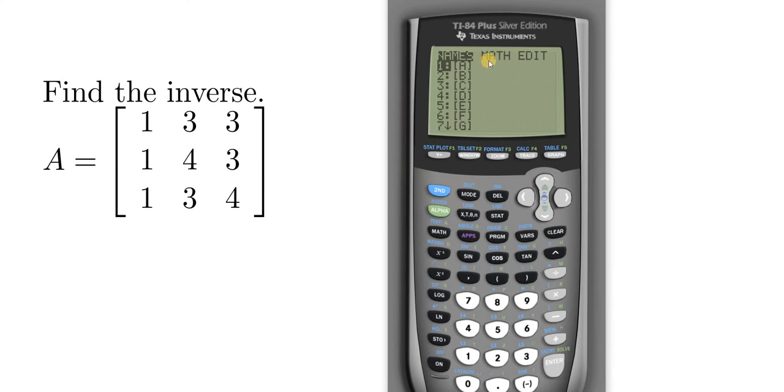Once you get here you want to go over to where it says edit. That's where you get to enter the matrix into the calculator. To get to edit you have to use the arrow keys. I'm going to use the right arrow key and that puts us under edit. Now you just get to pick the matrix. I'm going to go ahead and pick A because this one is called A and it's the first one on the list, so I'll click enter.